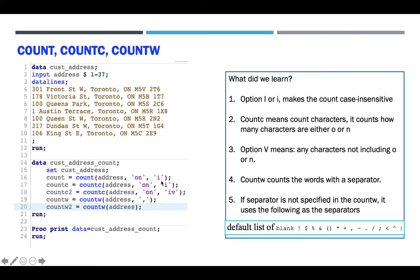Now we have a third parameter called a modifier. When you put an 'i' here, it makes the COUNT case-insensitive. So calling COUNT with the 'i' modifier will match the 'o' in 'Front', the o's in 'Toronto', and also the 'O' in 'Ontario' because the 'i' makes it case-insensitive. This will return 3. Line number 17 looks similar.